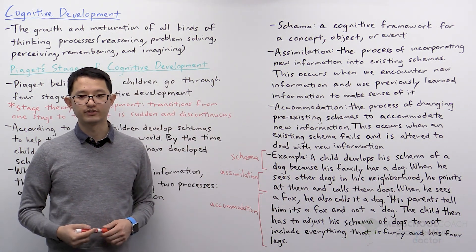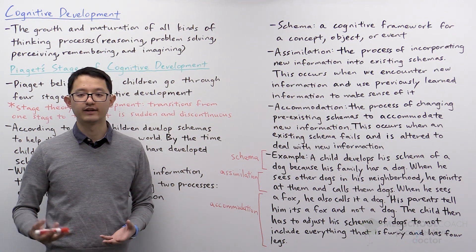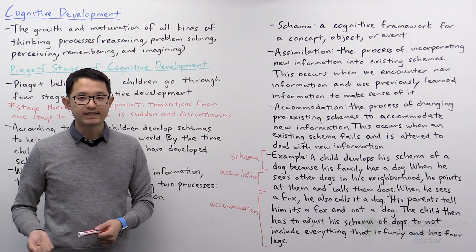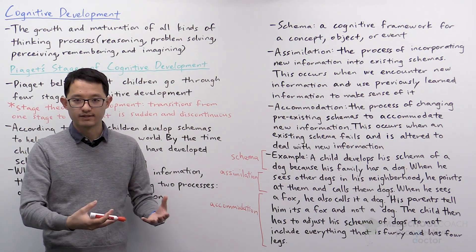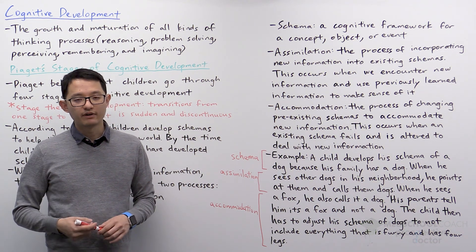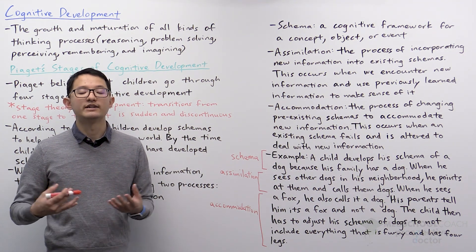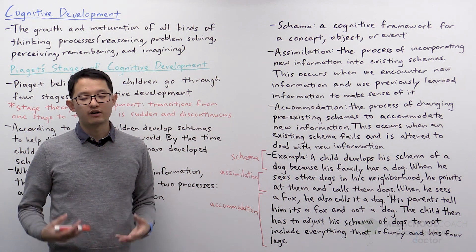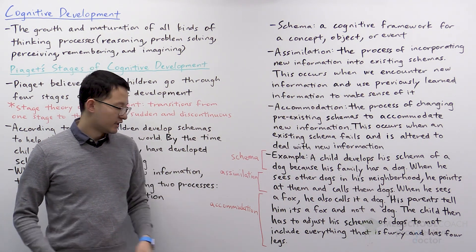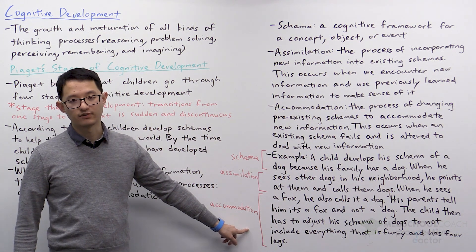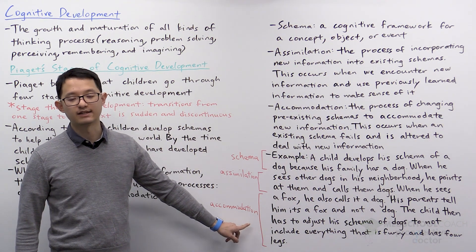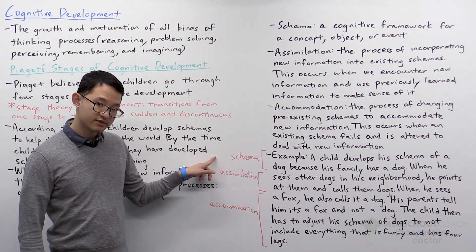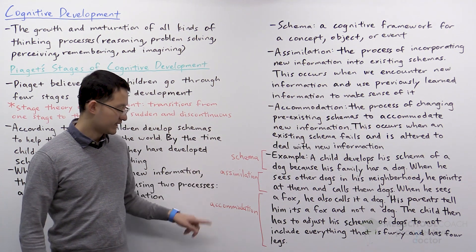When the child encounters new information — a fox, an animal the child has never seen before — the child first tries to use a pre-existing schema to identify it and thinks it's a dog. However, the parents tell the child he is wrong. The child's schema has failed, and now the child has to alter his schema of a dog to recognize that not everything that is furry and has four legs is a dog. These are the key terms for Piaget: schema, assimilation, and accommodation.